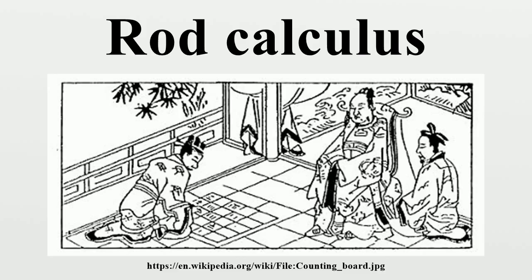For numbers larger than 9, a decimal system is used. Rods placed one place to the left of the units place represent 10 times that number. For the hundreds place, another set of rods is placed to the left representing 100 times that number, and so on. The number 231 is represented in rod numerals with one rod in the units place representing 1, three rods in the tens place representing 30, and two rods in the hundreds place representing 200, with a sum of 231.